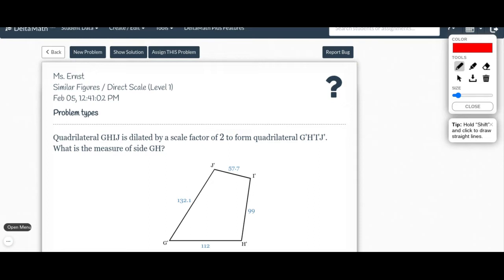So our first one says quadrilateral GHIJ is dilated by a scale factor of two, meaning that we multiplied everything on it by two to form quadrilateral GHIJ prime. What is the measure of side GH?